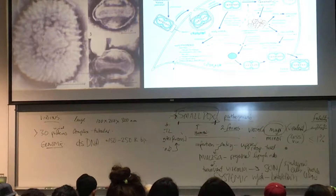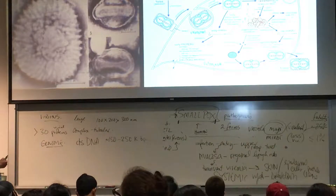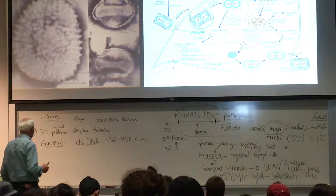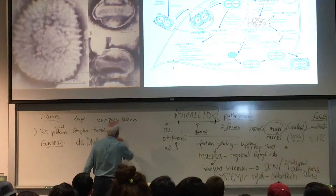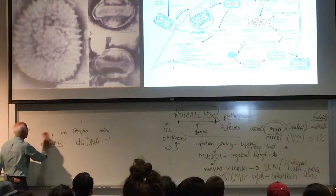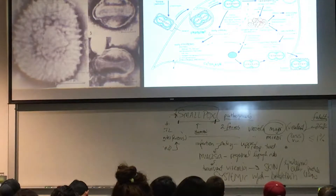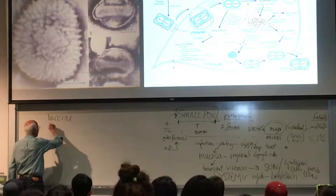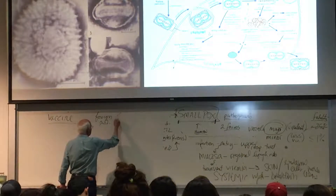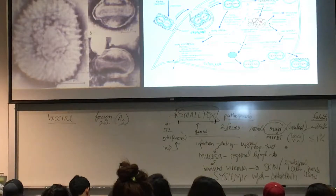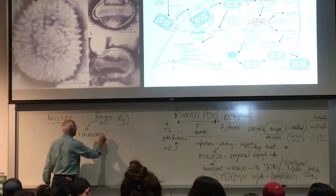Our lessons for poxviruses and vaccine application go back to dissection of vaccinia virus, the vaccine strain of poxviruses. Shifting back to vaccinology and strategies: with an immunization, you have a foreign protein — our antigen — that we introduce into the animal, and as a consequence of introducing that antigen, we get an immune response.